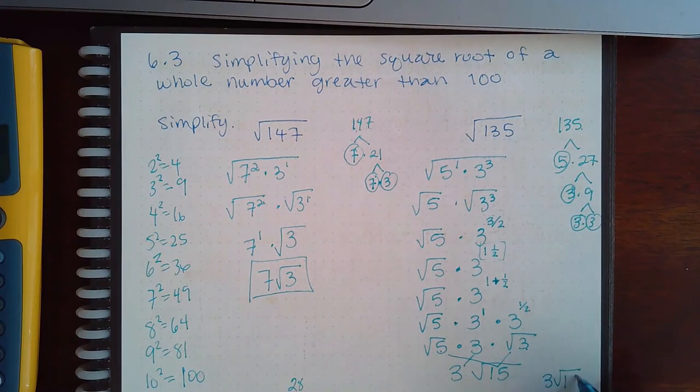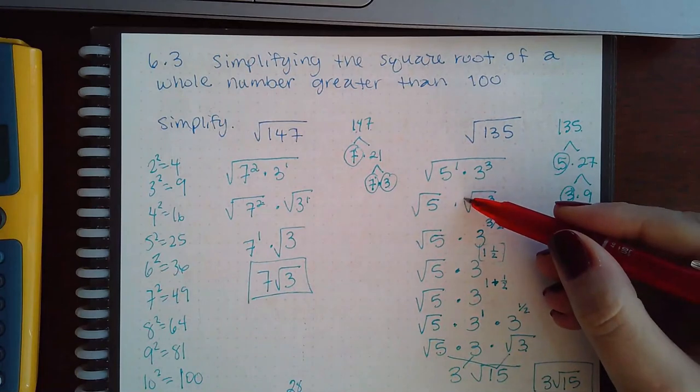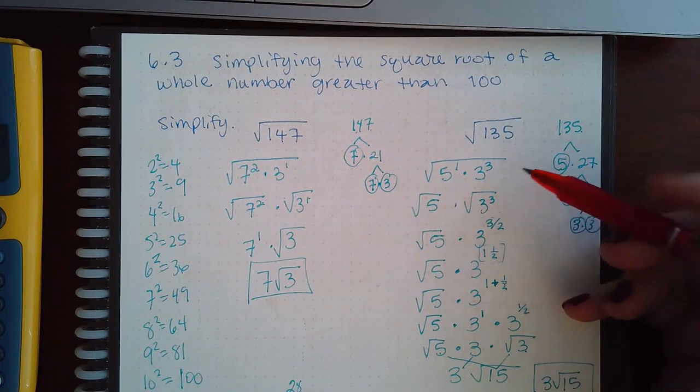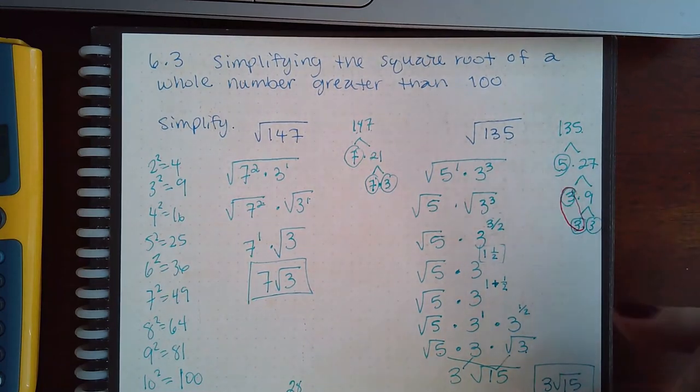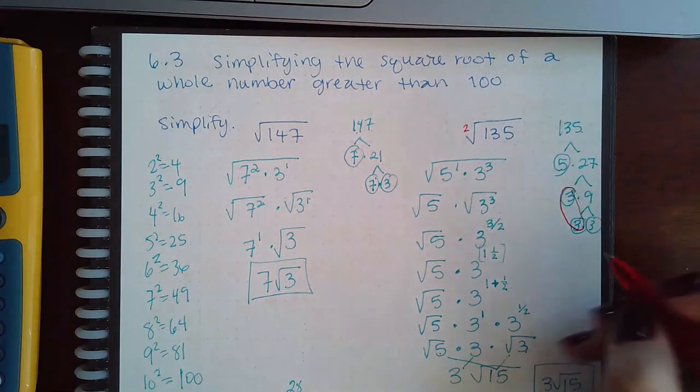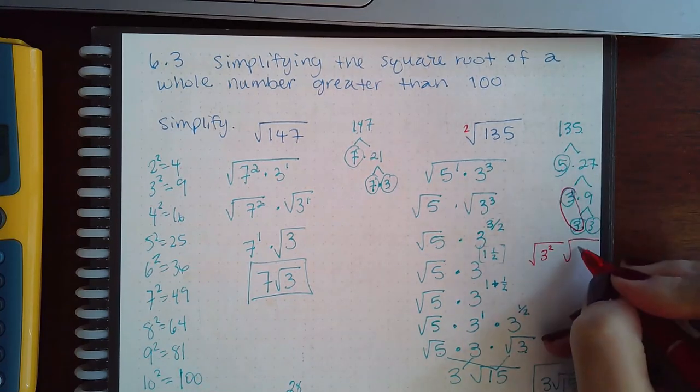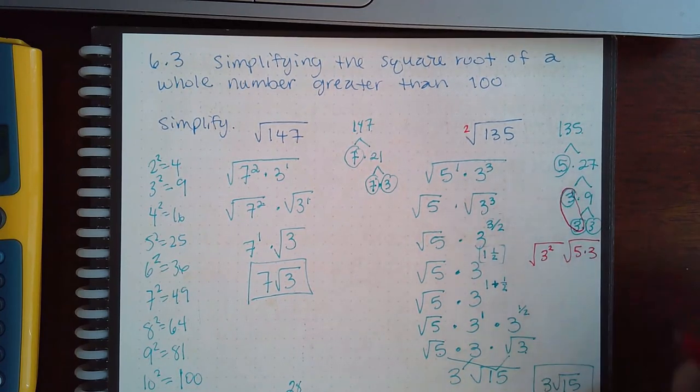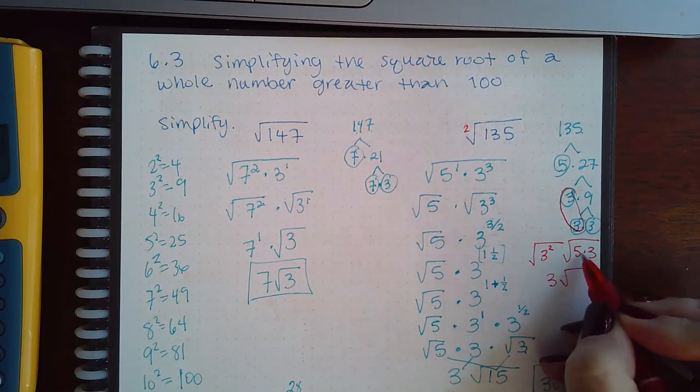Now another way I could have done that is pretty similar to that method. The only thing different is because I knew I was doing square roots, when I came to write this step, what I could have done is put the two together because knowing that it's a square root, meaning the index here is a 2, I could have put those two guys together and then the leftover guys in the other square root.